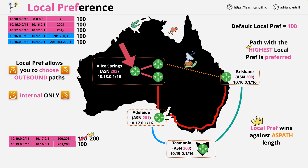So to summarise: local preference is for influencing traffic leaving your autonomous system. It's advertised internally only, not externally. Other autonomous systems don't know about your local preference and they don't care. There's a default value of 100, and higher values mean routes are more preferred. This overrides the length of AS path, giving you ultimate control of how traffic exits your autonomous system.